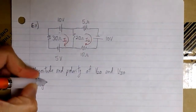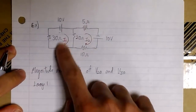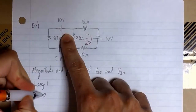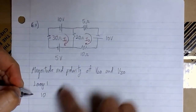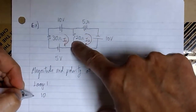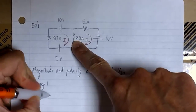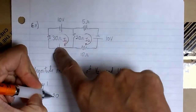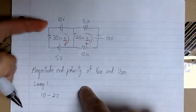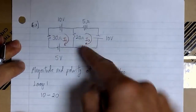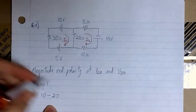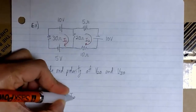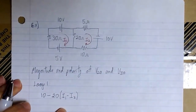Now we're going to write the Kirchhoff voltage law equation for each loop. We'll start with loop 1. We have the voltage from the source, which is 10. Following the direction of the current we find a drop across the 20 ohm resistor, and that drop is 20 times the current flowing through it. The current through 20 depends on I1 and I2 — I1 is flowing downwards and I2 is flowing upwards — so the real current flowing through 20 is I1 minus I2.